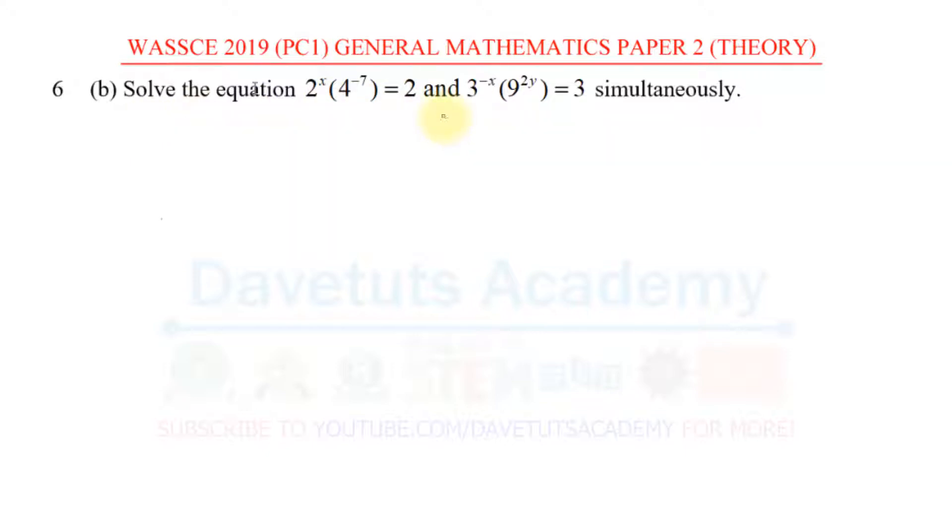Let me just find a way to divide the board into two. In the first case, we are told that 2^x × 4^(-7) = 2. So looking at this, since this is indices, we know that if we make the base equal we can easily equate the power, or you can even just divide both sides by 4^(-7).